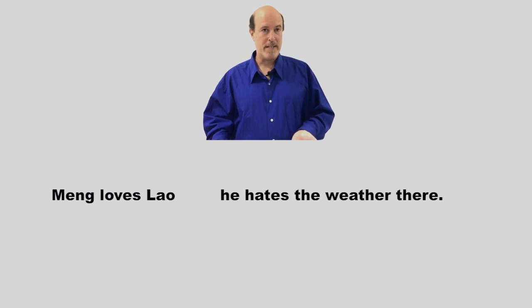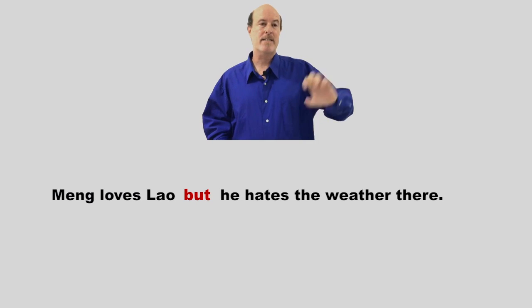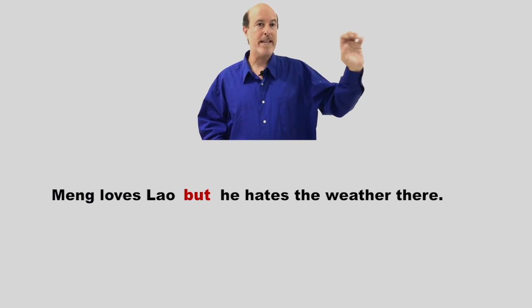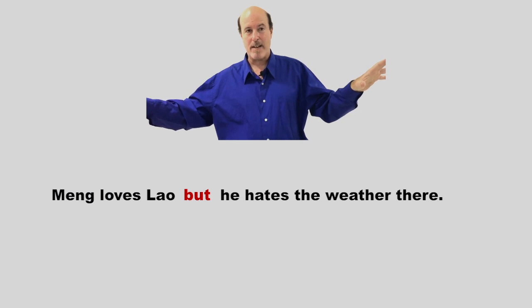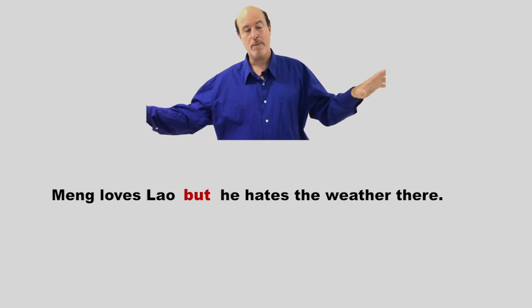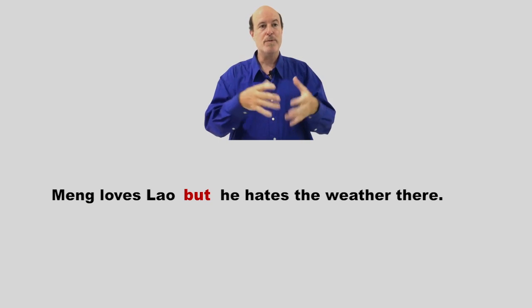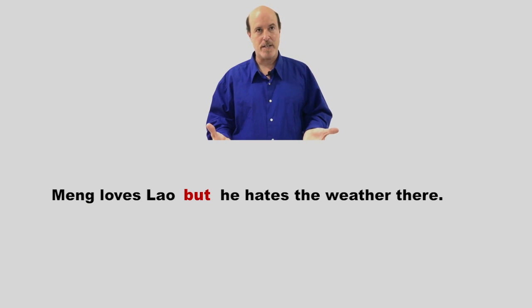'But' is when the two clauses disagree — one clause says this, but the second clause says something different. For example: Ming loves Lao, but he hates the weather there. First, Ming loves Lao. But then, he doesn't like Lao because of the weather. So 'but' is used as the conjunction when the clauses contrast with each other.